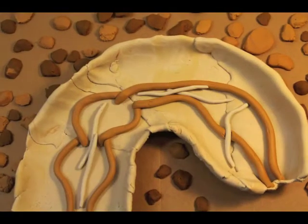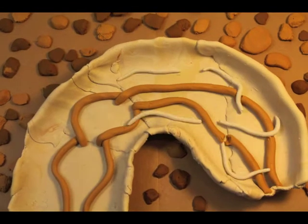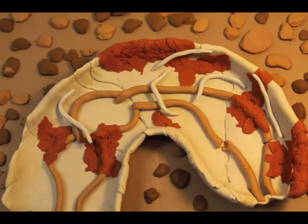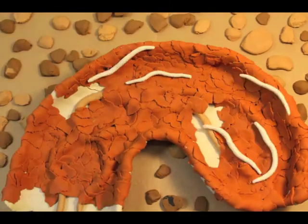Nematodes swarm into its mouth and enter the body cavity. There, they release their bacteria, which spread throughout the grub, killing it.